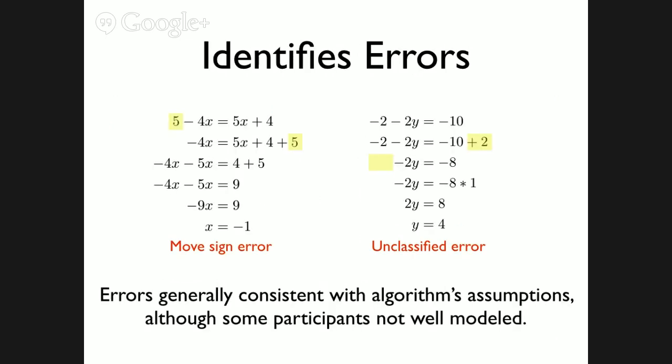We manually annotated a subset of people's equation-solving behavior, having annotators categorize what types of errors they made. We found the majority of errors were part of our space of misunderstandings, and when a person made an error the annotators categorized as being in that space, the model was relatively accurate at capturing it. There were some errors not captured by our model — future work will expand the space of misunderstandings to better model all participants.